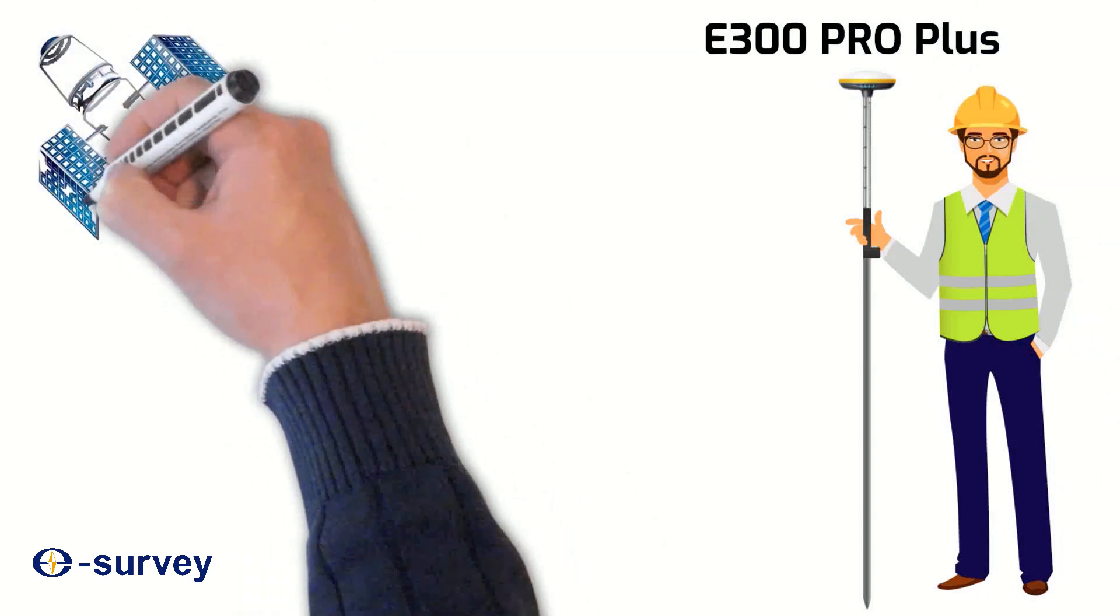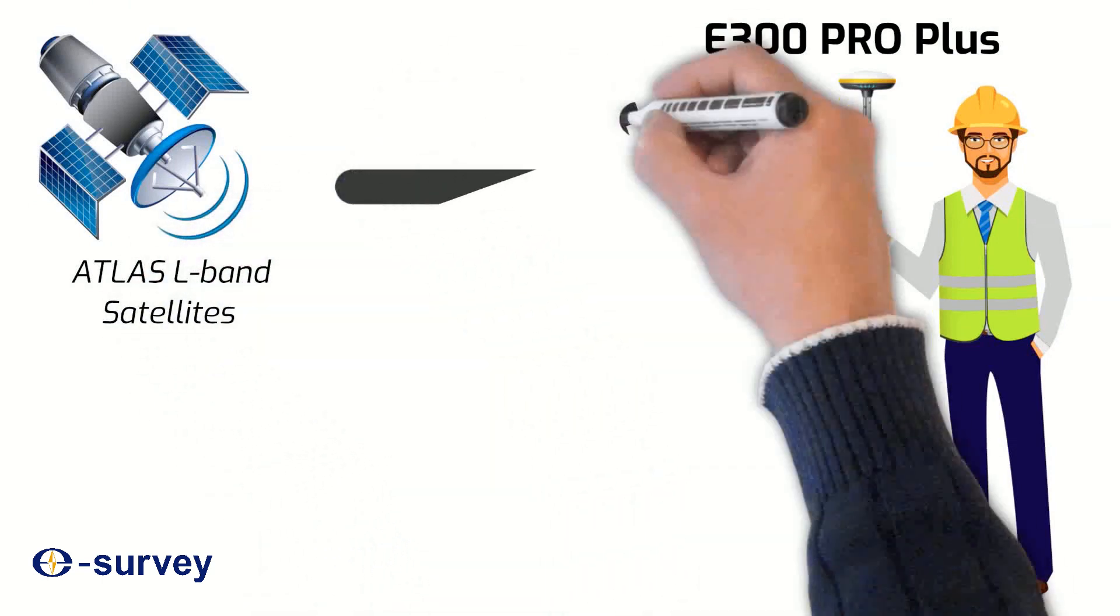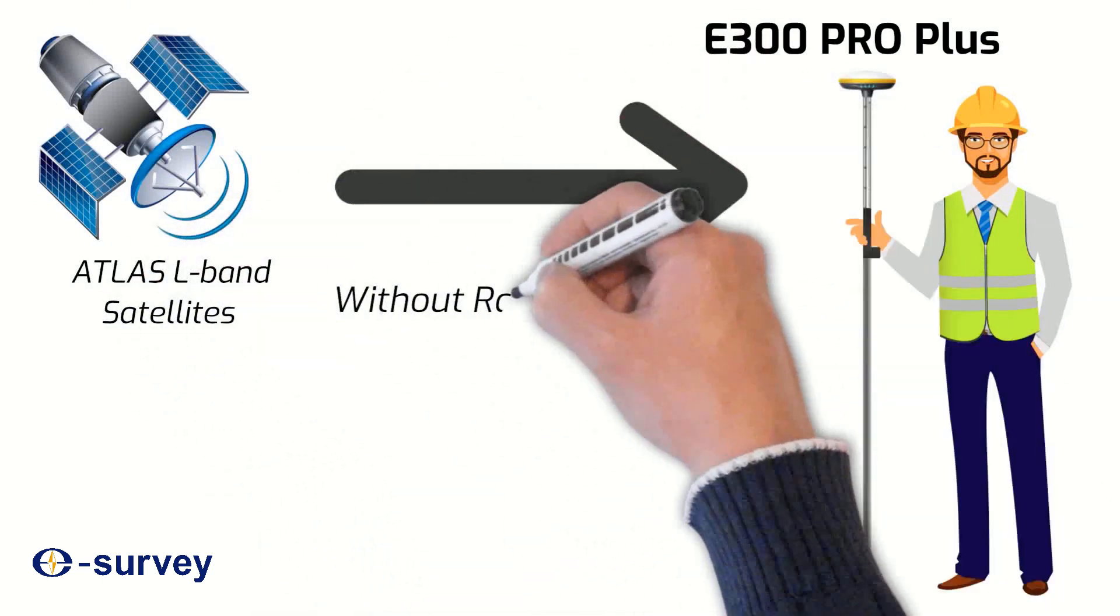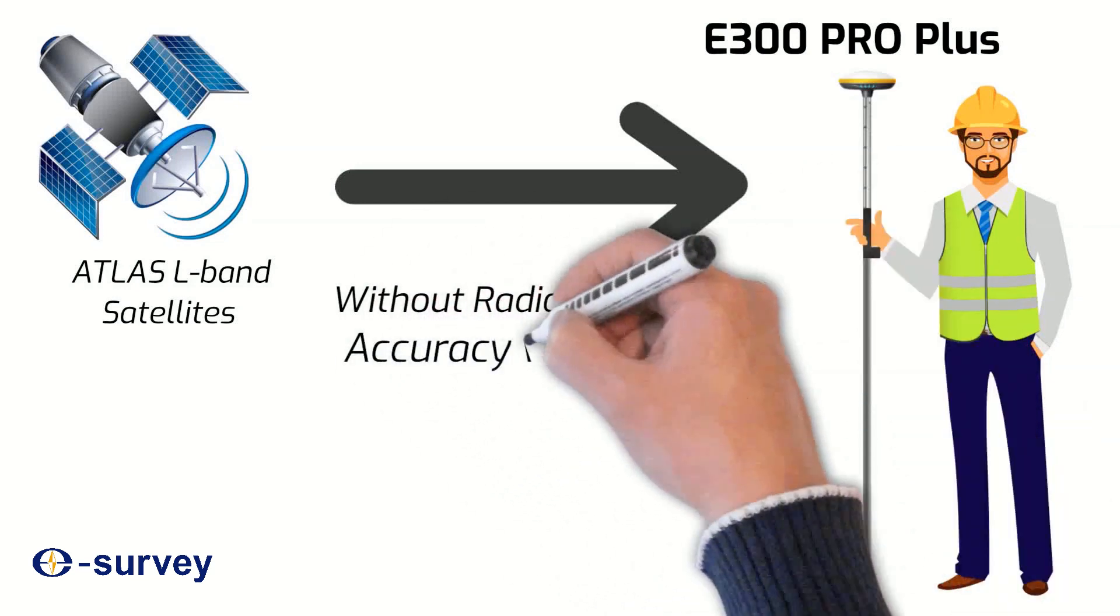The E300 Pro Plus system does not need internet or radio and base station to operate, and the quality of the work still remains within 2 cm.